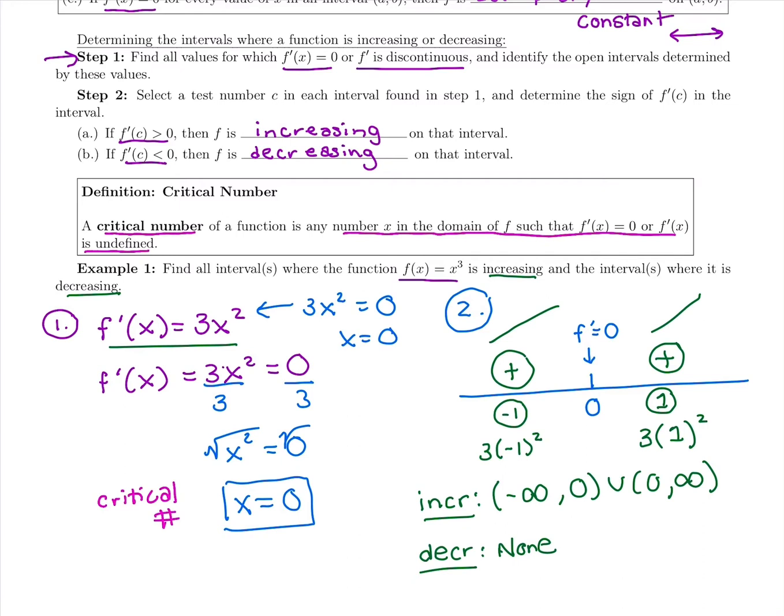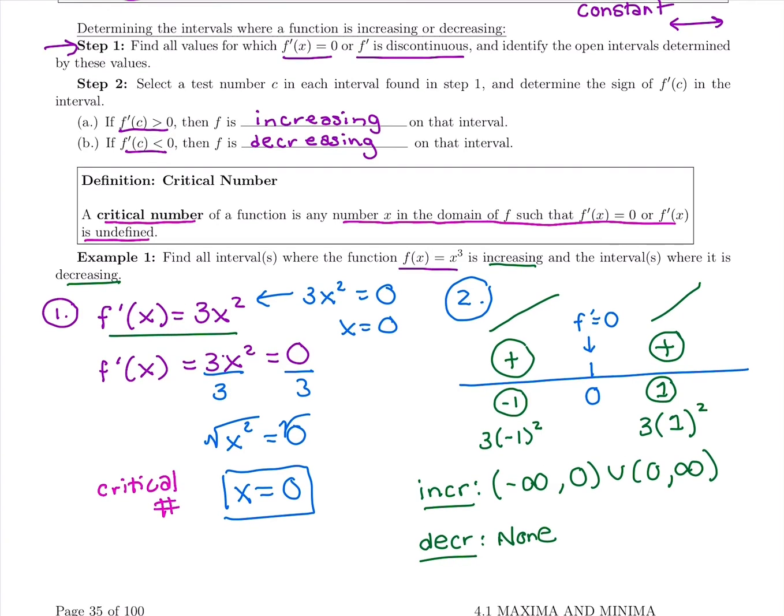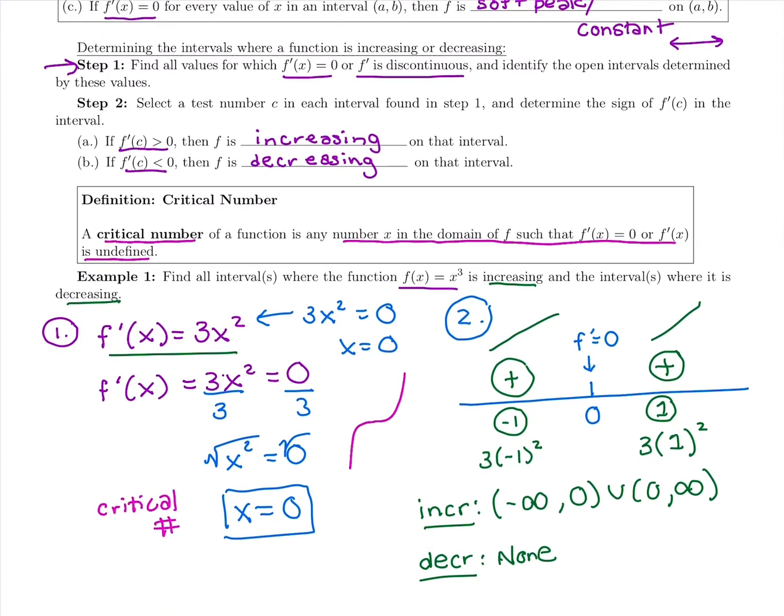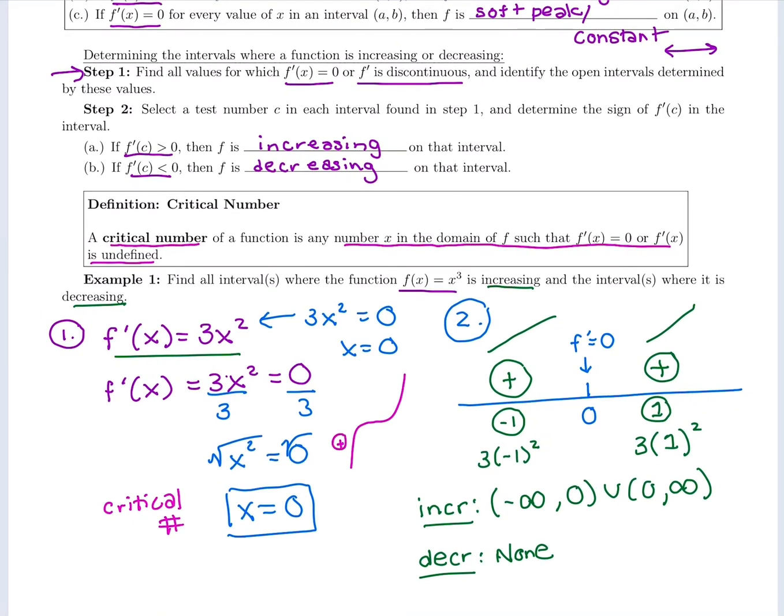So then do we have any relative extrema? We want to look for our sign change. If we draw this picture off to the side here, we would want to draw something that is increasing, 0 derivative, and then increasing again. This might not be exactly what it looks like, but just representing this change of a positive derivative. Here's our critical number where the derivative is 0, and then it just goes positive again.